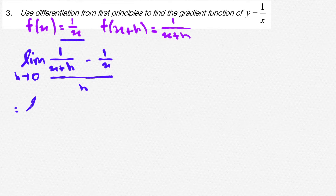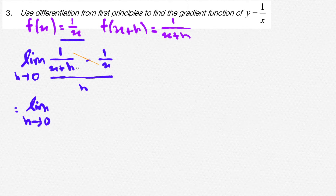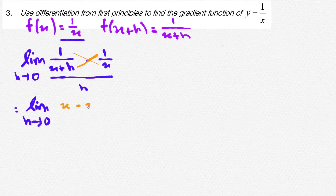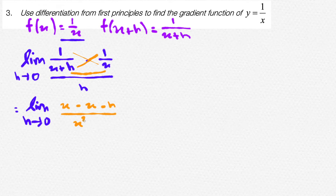This would equate to the limit as h approaches 0. Now, you need to know how to simplify fractions. As you can see in the numerator, we have two fractions, so let's solve with a common denominator. Times the top together and this will give you 1 into x, which is simply x. And then x plus h times 1, but since there is a minus, it will be minus x minus h, over x times x plus h, which is x squared plus hx. Now divide the whole thing by h.